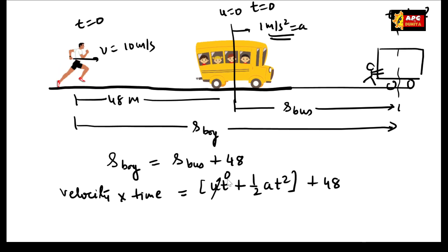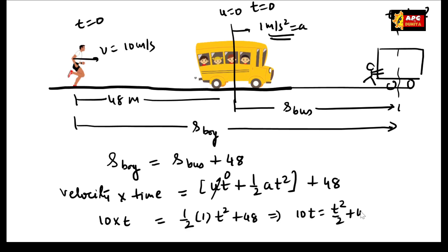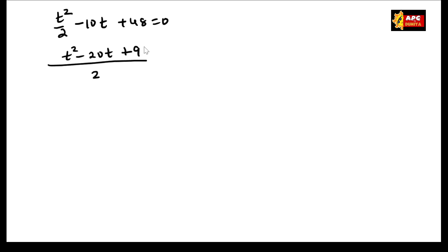The bus's initial velocity u is 0, so the bus distance is ½ × 1 × t². The man's distance is 10t. Setting up: 10t = t²/2 + 48. Rearranging: t²/2 − 10t + 48 = 0. Multiplying through by 2: t² − 20t + 96 = 0.